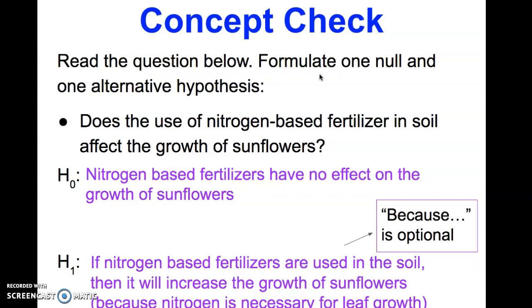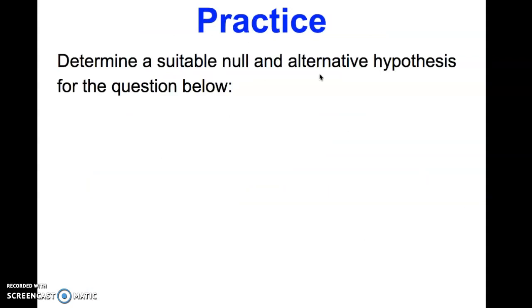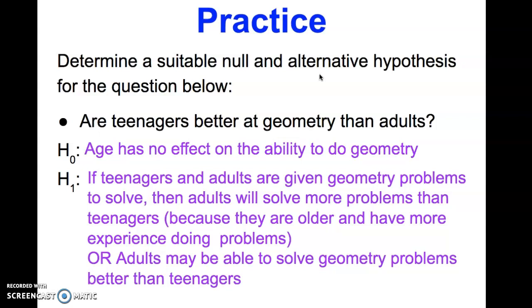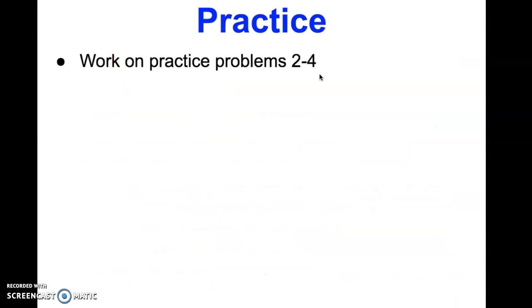That because statement is an optional statement. Let's look again. Determine a suitable null and alternative hypothesis for this question: Are teenagers better at geometry than adults? The null hypothesis might read: Age has no effect on the ability to do geometry. The alternative hypothesis would read: If teenagers and adults are given geometry problems to solve, then adults will solve more problems than teenagers because they are older and have more experience doing problems. Or it could read: Adults may be able to solve geometry problems better than teenagers. Notice the if-then format was removed, but it still works as a hypothesis because it is testable.